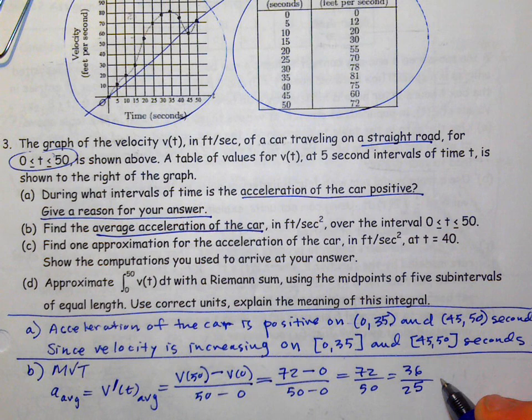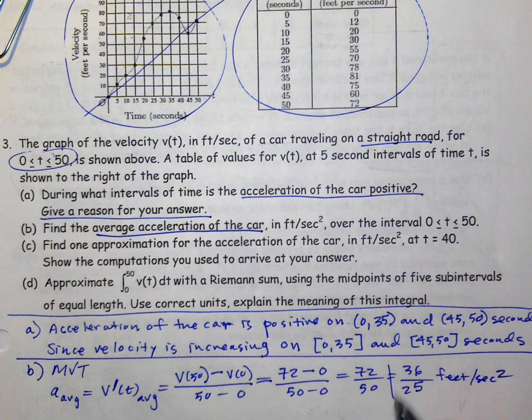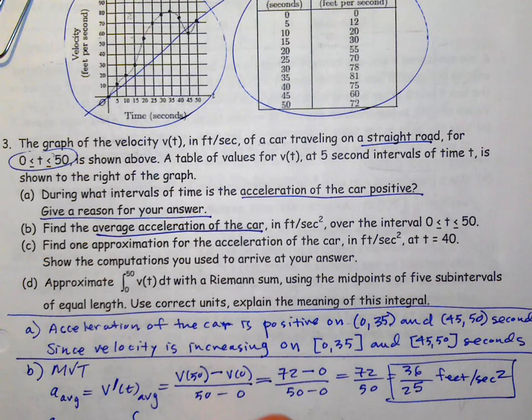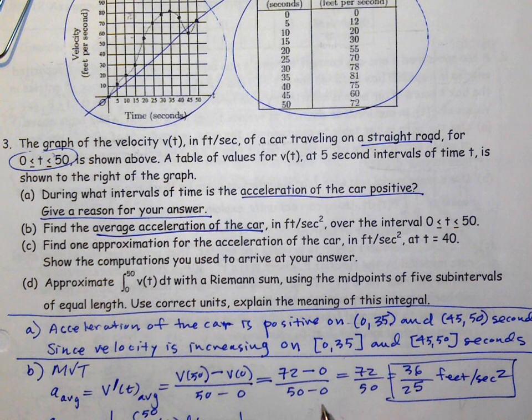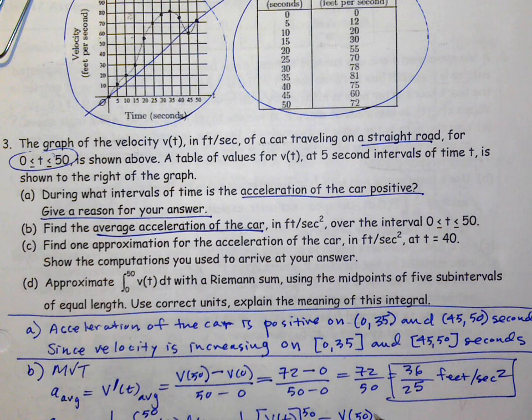You could also use the average value formula: (1/50)∫₀⁵⁰ a(t) dt. The antiderivative of acceleration is velocity, so that becomes [v(50) − v(0)]/50 — the same result. Either approach works; the second just involves a bit more setup before arriving at the same answer.